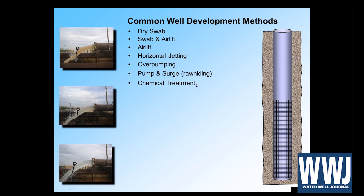All of these methods can be done in conjunction with chemical treatment — chlorine, surfactants to break up clays, and many other chemicals. They should be applied in accordance with the supplier's guidance, swabbed or jetted into place, pushed out to contact the wall cake, allowed to do their job, and then additional energy applied to remove the loosened material. Different methods are appropriate for different situations, and different approaches are favored in different areas based on local geology and well design preferences.